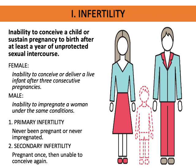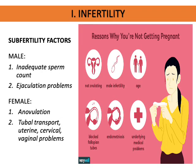When engaging in coitus at least four times a week, 50 percent of couples will conceive within six months and 85 percent within 12 months. However, couples who engage in coitus every day may actually have more difficulty conceiving than those who space it every other day.